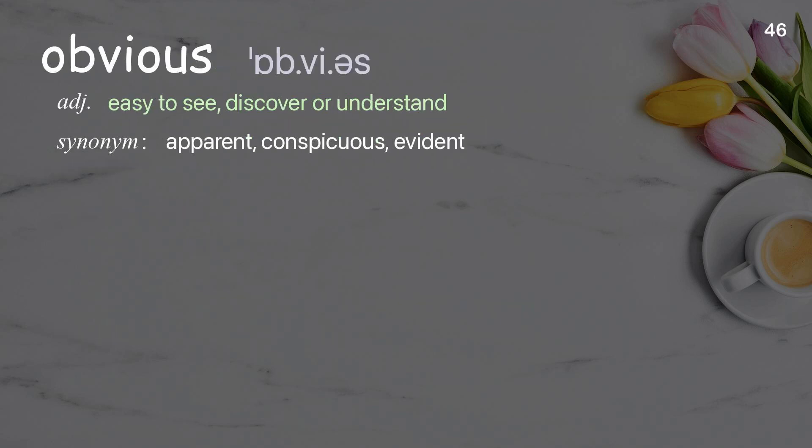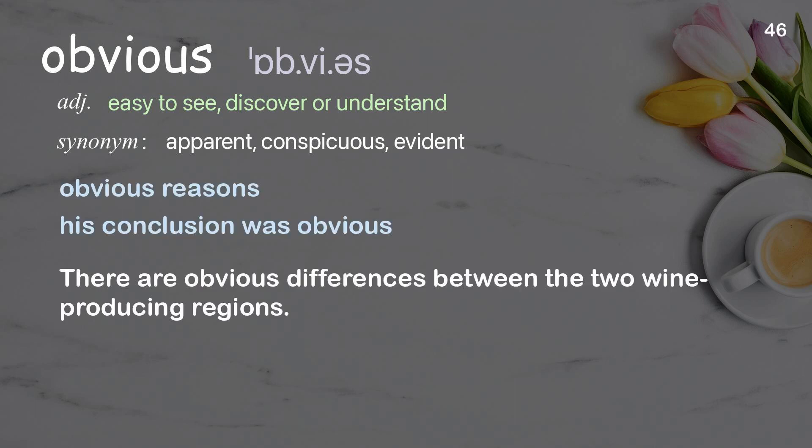Obvious: easy to see, discover, or understand. Examples: obvious reasons; his conclusion was obvious. There are obvious differences between the two wine-producing regions.